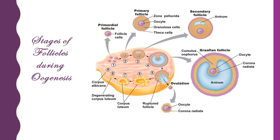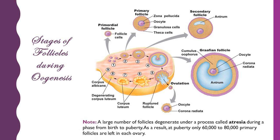After a few days, the corpus luteum degenerates and forms a white body called corpus albicans. A large number of follicles present in both ovaries of a female start degenerating after birth under a process called atresia. At the time of birth a female contains about two lakh primary follicles in each ovary, but this number falls to 60,000 to 80,000 primary follicles in each ovary due to atresia by the time the female attains puberty. The reproductive cycle of a female runs with this limited stock of primary follicles only.